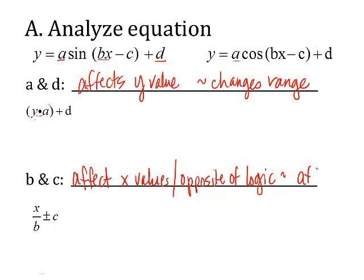B and c are going to affect your period — not the domain, but the period of your equation. In the formula, we'll take whatever x is, divide it by whatever b is, and then add or subtract whatever the opposite of c is. It's the opposite: so if you subtract c in the equation, you add c in the formula. Let's do some examples.